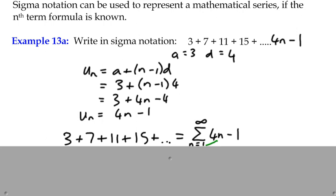If n is 2, 4 times 2 is 8, subtract 1 is 7, which is the second term, and of course the summation means we're adding all of these elements together.